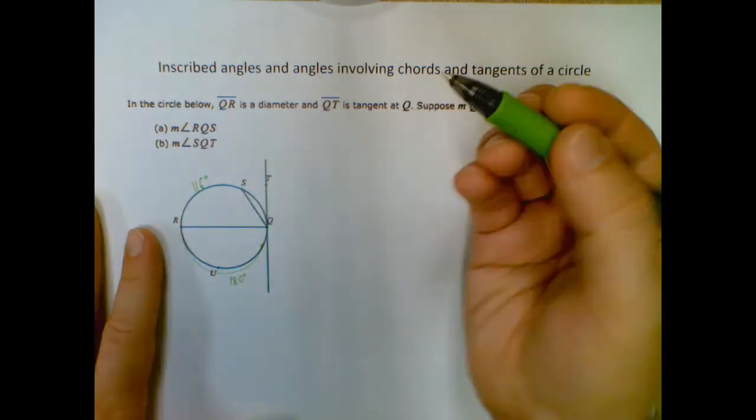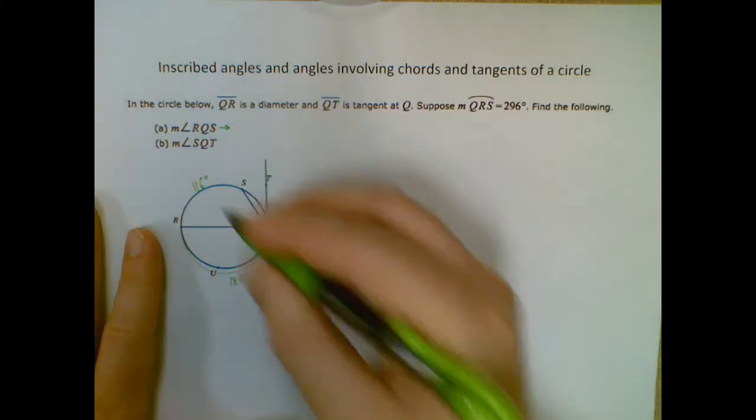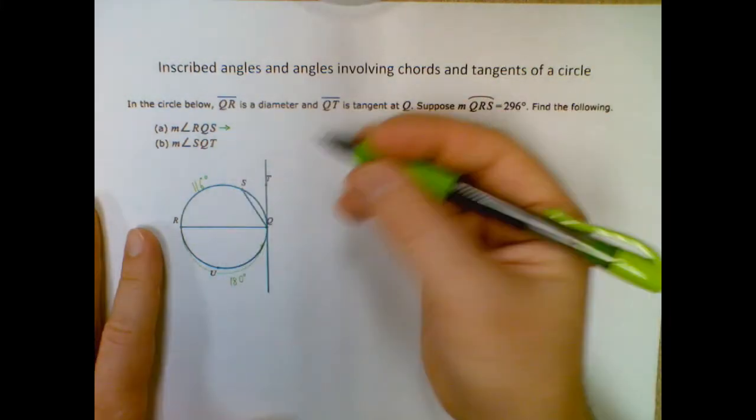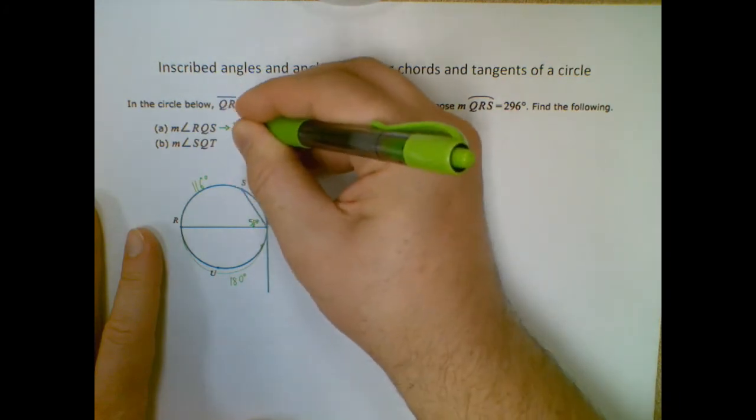So if I divide that in half, this is what we're finding right now, by the way. If I divide that in half, I get 58 degrees by 116 divided by 2.